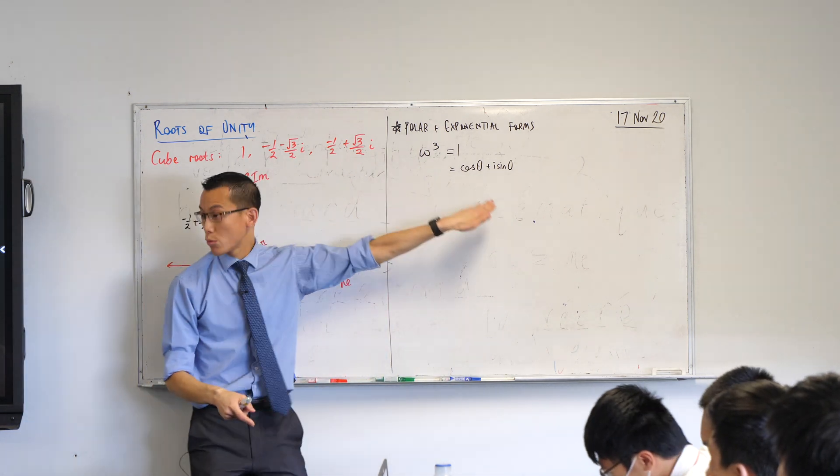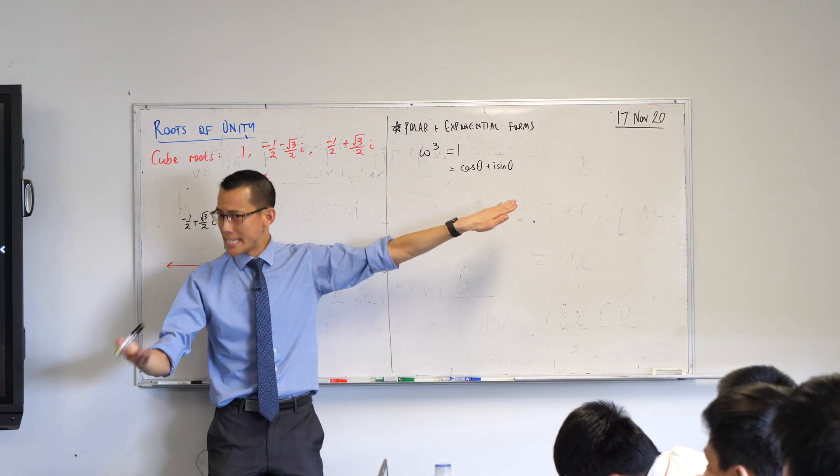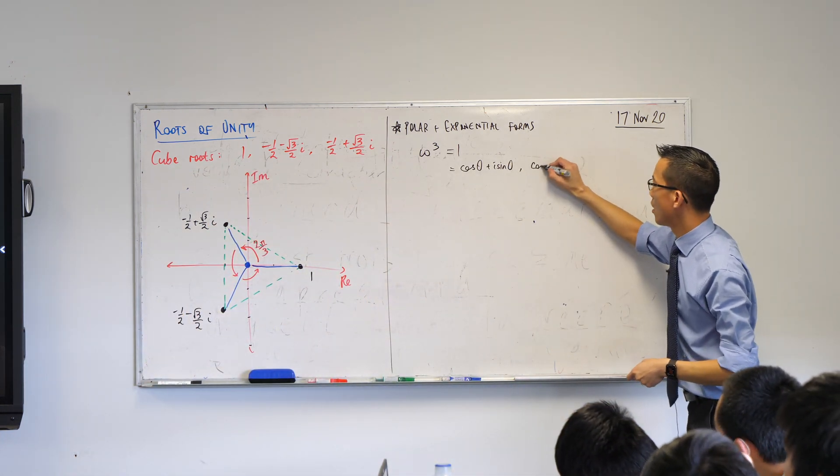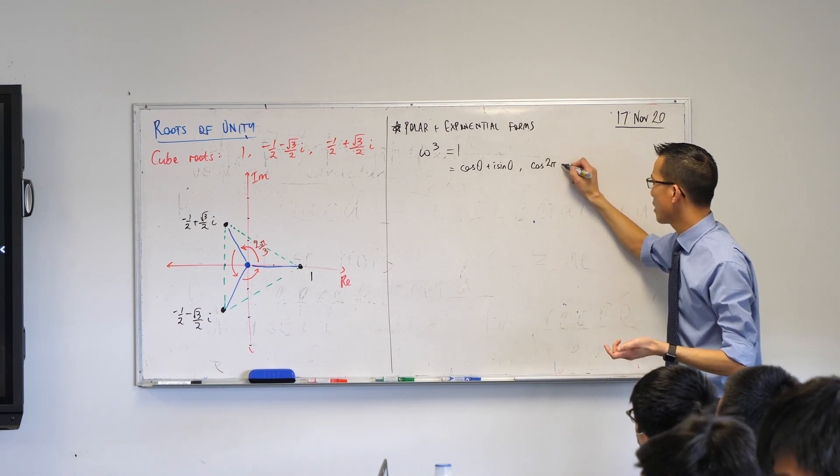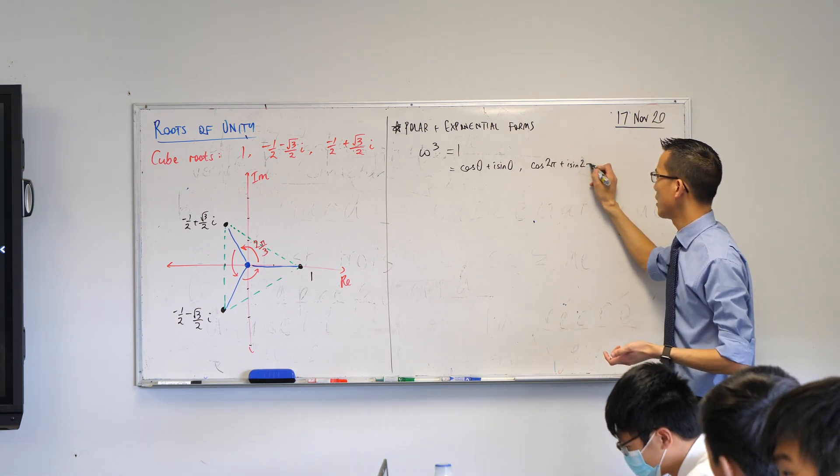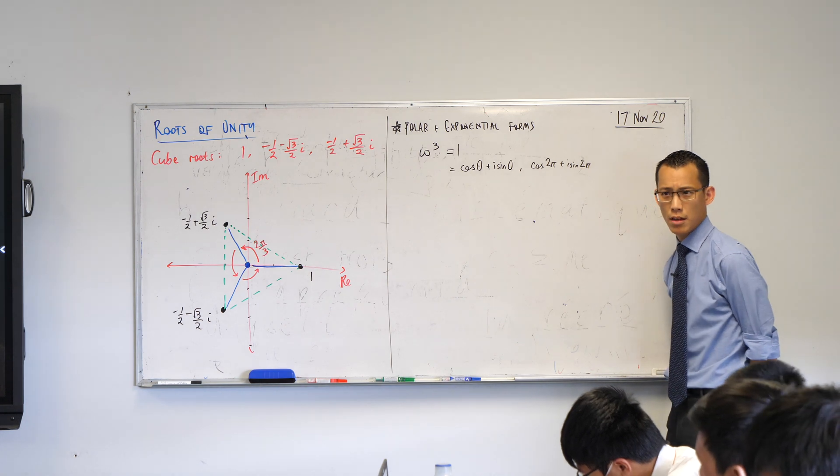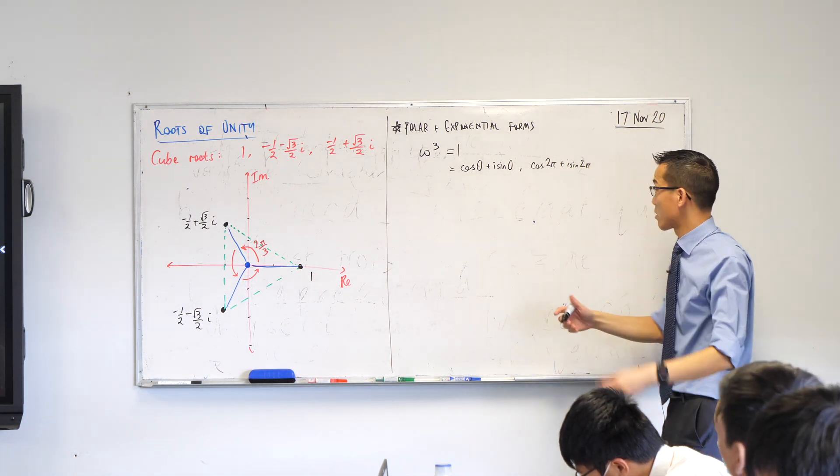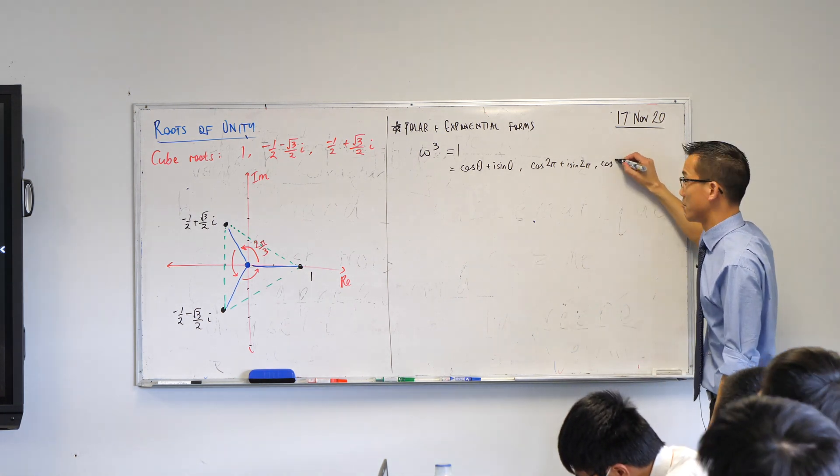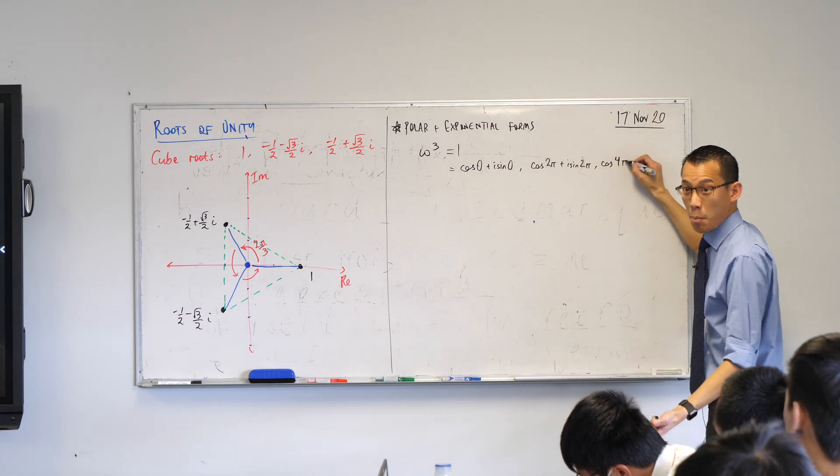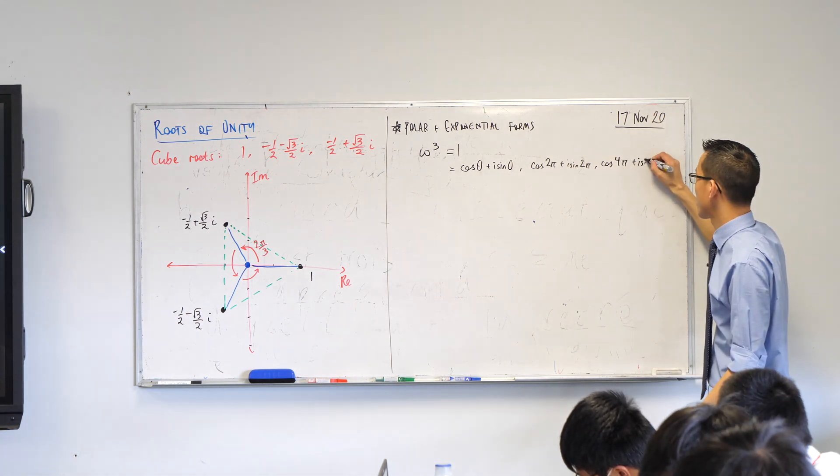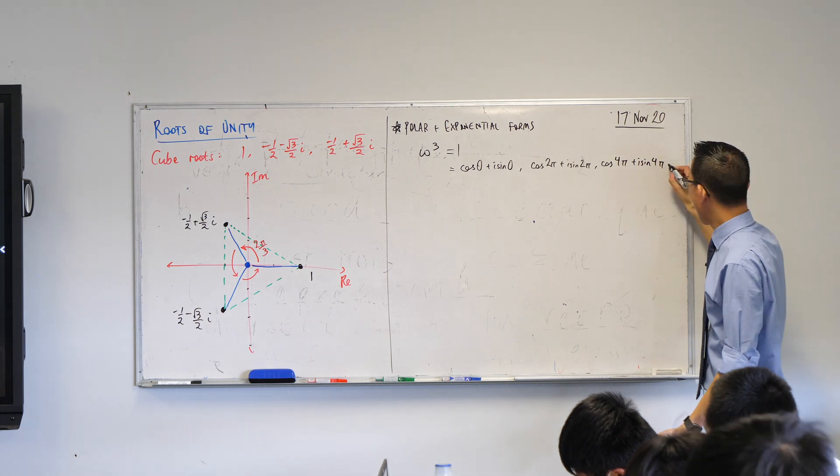So cos 0 plus i sine 0, isn't that the same as cos 2 pi plus i sine 2 pi? Do you agree with that? And I could keep going as long as I want. I could go to the next one, go another 2 pi radians around, cos 4 pi plus i sine of 4 pi and so on.